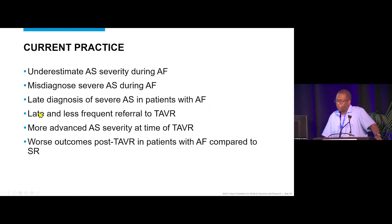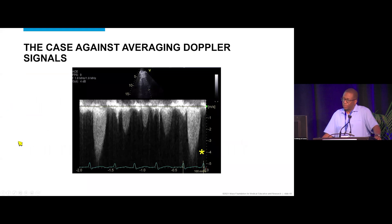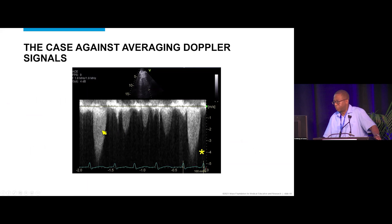Aortic valve stenosis is far more advanced at the time of replacement in patients with AFib compared to those in sinus rhythm, and outcomes post-TAVR are worse. The core issue is illustrated by a Doppler continuous wave signal showing velocities and mean gradients across the aortic valve in AFib — note the marked variability due to irregular cycle lengths and impaired cardiac function.